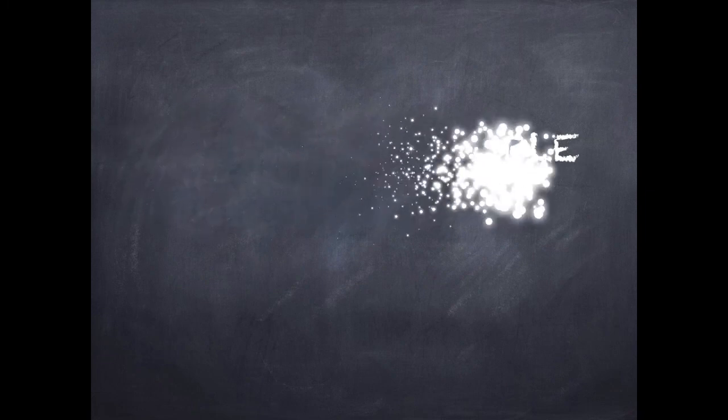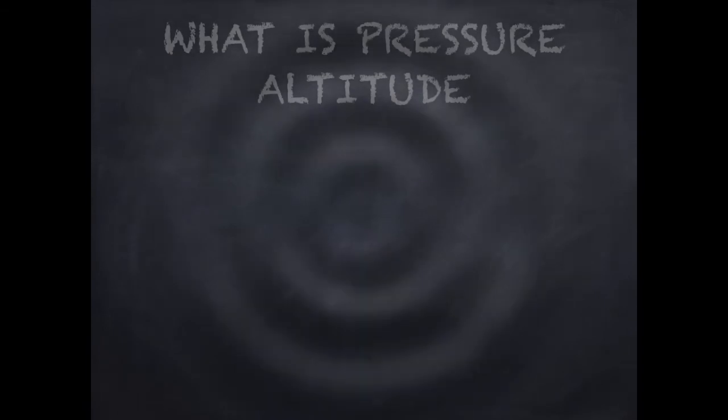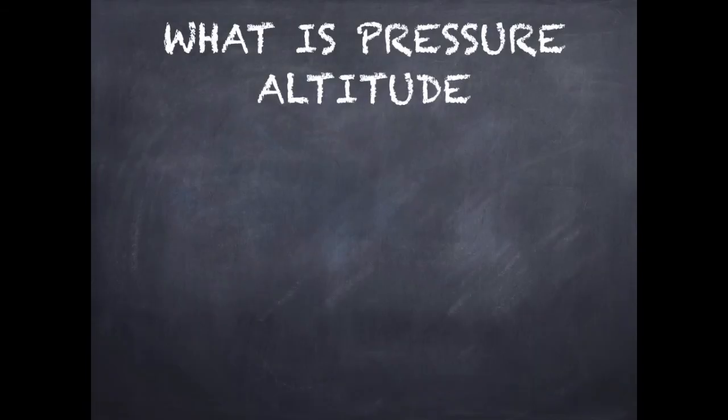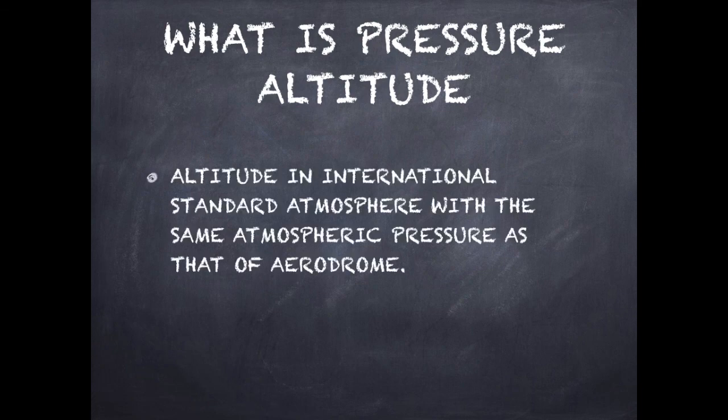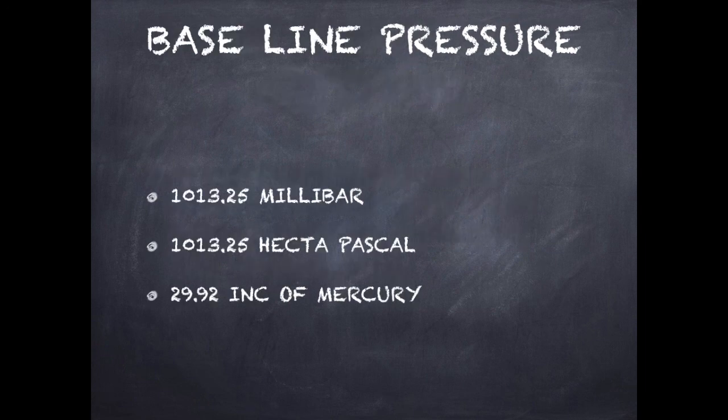Hey you guys, welcome back. Today I shall be covering pressure altitude. What is pressure altitude? Pressure altitude is the international standard height above the 1013.25 international standard atmospheric pressure. This is also equivalent to 1013.25 millibar, also 29.92 inches of mercury.